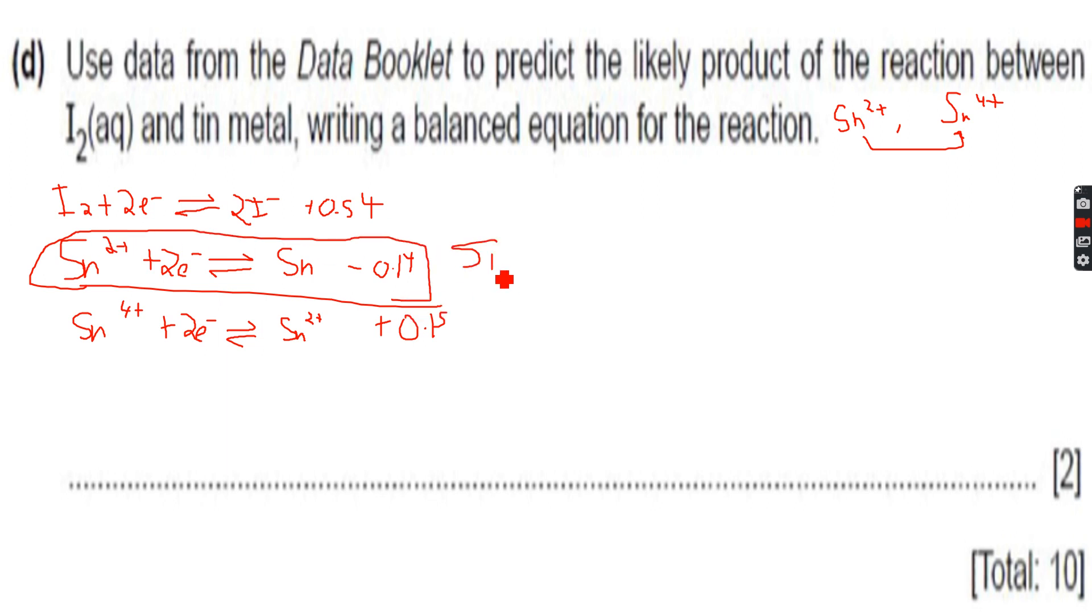This gives us Sn goes to Sn2+ plus 2 electrons, and this will become plus 0.14, and this is what we will be adding with the plus 0.54. However, this Sn2+, now if you see, when we add it together, this becomes 0.68 volts.